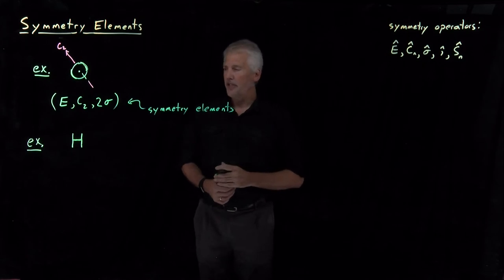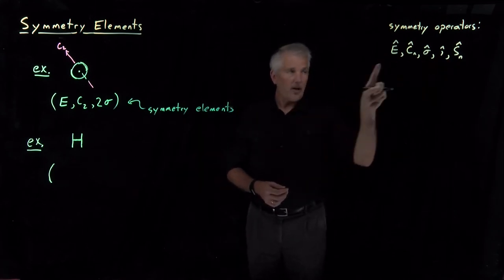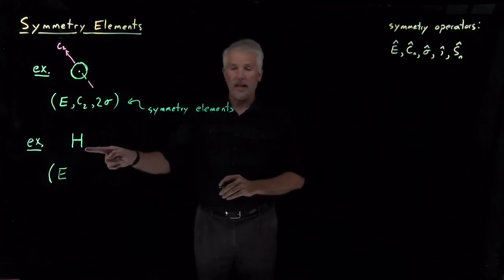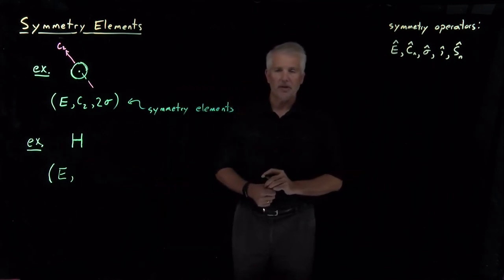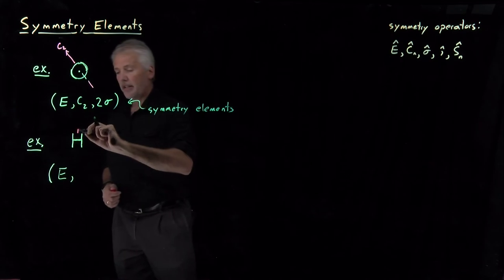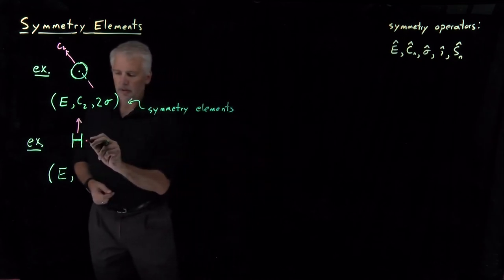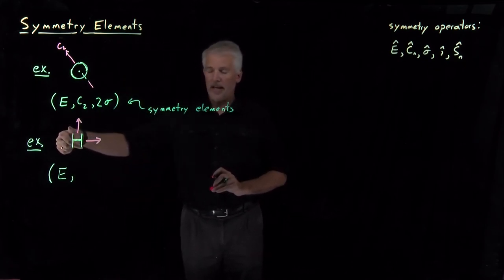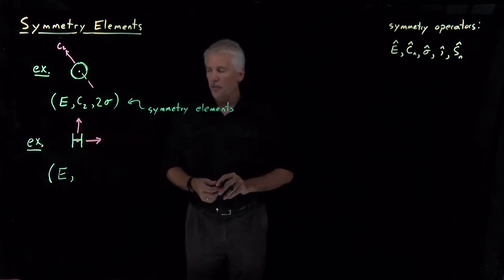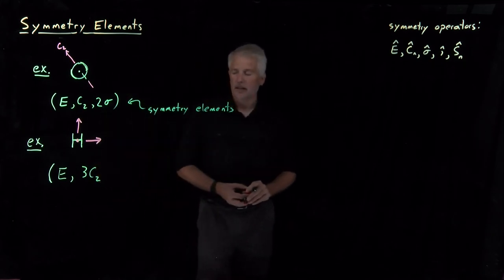The crossbar of the H is halfway up the H. Going down the list — certainly the identity leaves the H unchanged. Identity is always going to be one of the symmetry elements for every object you consider. For C2 axes, I can find one right here — if I spin the letter around that axis, it looks the same. There's another C2 axis — if I spin the letter around that axis, top becomes bottom and it looks the same. I've also got a C2 axis pointing out of the screen towards you — rotating the letter 180 degrees around that axis, it remains unchanged. So there are actually three different C2 axes for the letter H.